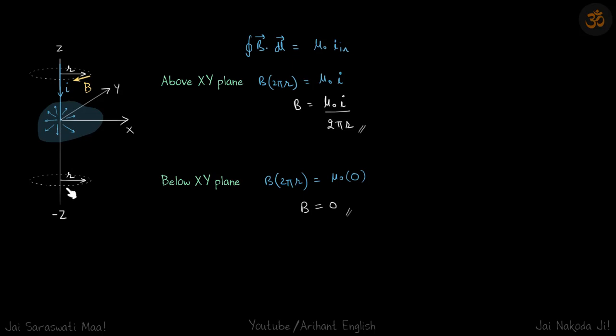Now below the plane, there will be some field B. We have already seen that because of the flat part, it will be tangential to the circle. And due to this part of the wire, the straight wire, again it will be tangential. So B times 2πr by symmetry, we can say it is μ₀ times 0, because there is no current crossing the loop. So B comes to be 0.